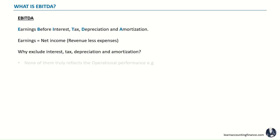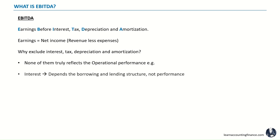But why are they excluded? Well, this is because none of them truly reflects the operational performance. For example, interest depends on the borrowing and lending structure, not the operational performance — it does not have much to do with the business itself but rather the funding needs of the organization. Similarly, tax depends on company's profits but also the applicable tax regulations, so a similar company in two completely different regions or countries may have different tax expenses.